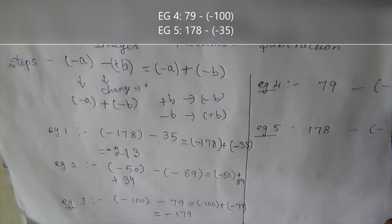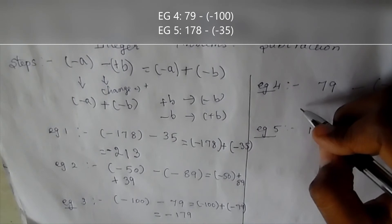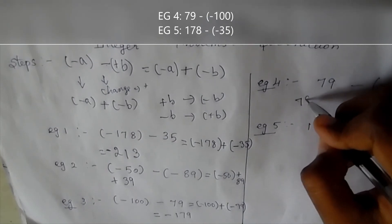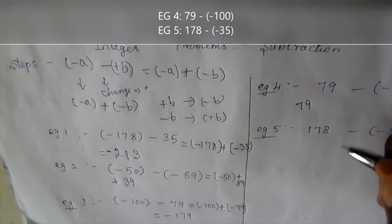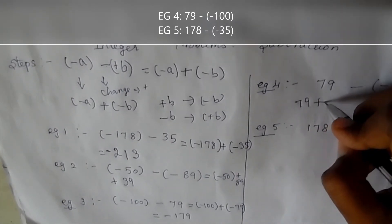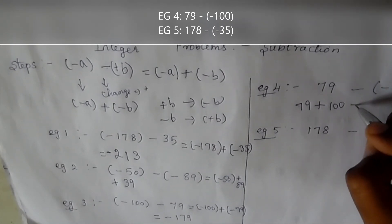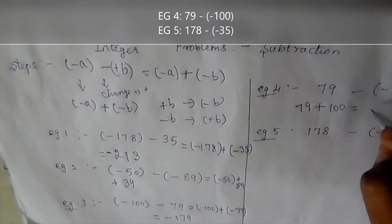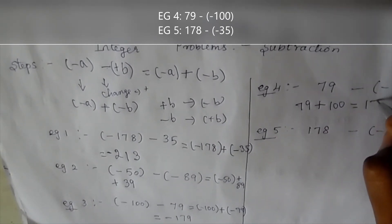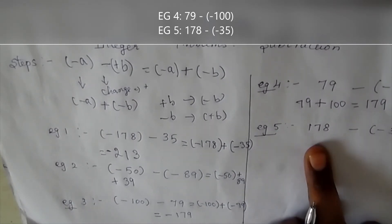Example 4: 79 minus minus 100. Write 79 as it is. The minus sign changes to plus, so minus 100 becomes plus 100. So the result is 79 plus 100, which equals 179.